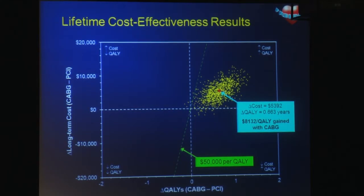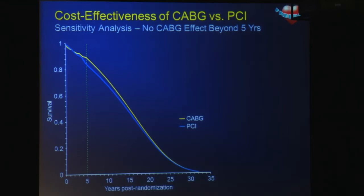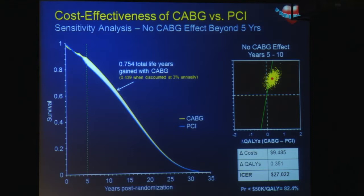So CABG was, according to our assumptions, a highly cost-effective therapy. We carried out several sensitivity analyses. Our most conservative assumed no CABG benefit beyond the five-year period. Under this assumption, we estimated 0.754 total life years gained with CABG and an incremental cost-effectiveness ratio of roughly $27,000 per QALY gained. Again, even this conservative estimate renders CABG a highly cost-effective therapy.